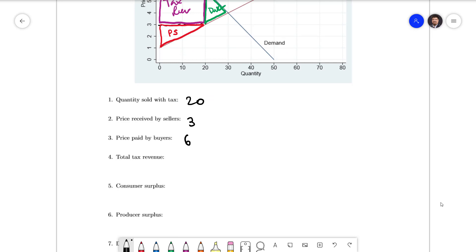To calculate the total tax revenue we can look at the box on our graph or we can remember the tax revenue is just the quantity times the size of the tax which is 3. That's going to be 60.